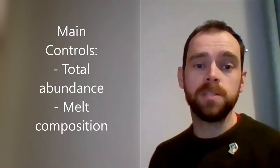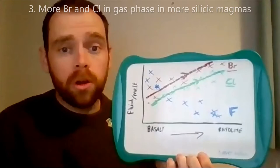The main controls on whether a halogen partitions from the melt into the gas phase are dominated by its total abundance in the system and by melt composition, and to a lesser extent, other factors.